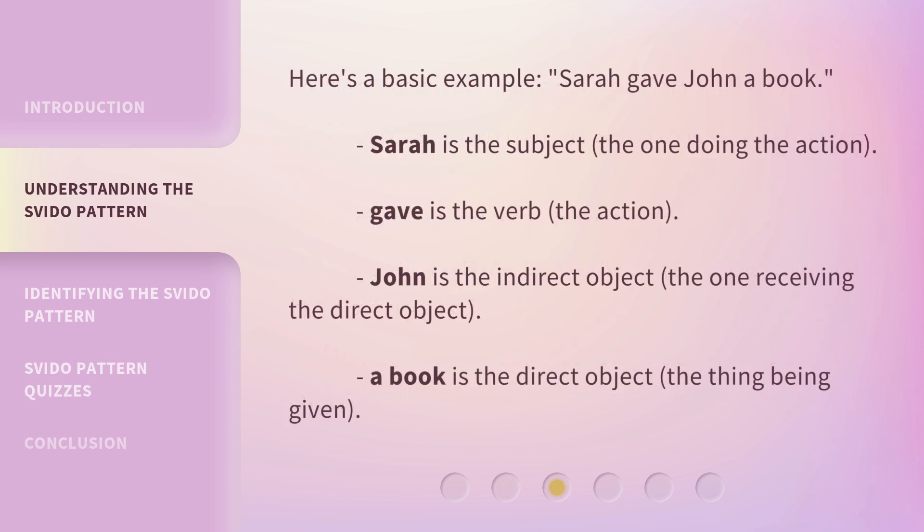Here's a basic example: Sarah gave John a book. Sarah is the subject — the one doing the action. Gave is the verb, the action. John is the indirect object, the one receiving the direct object. A book is the direct object, the thing being given.